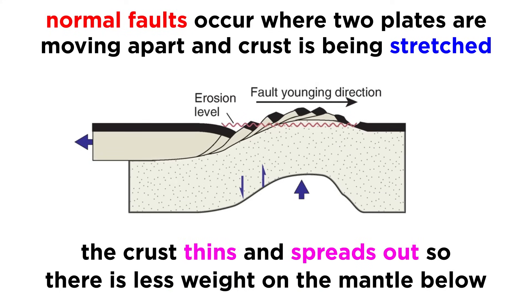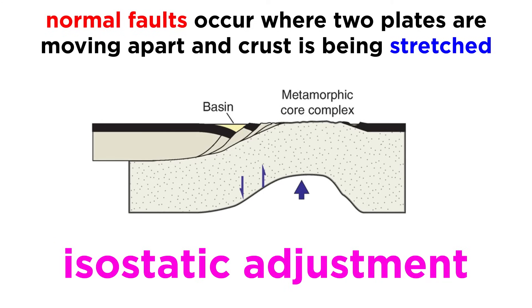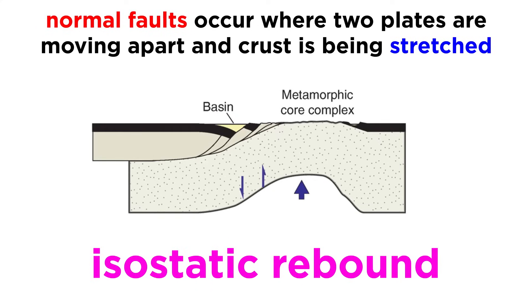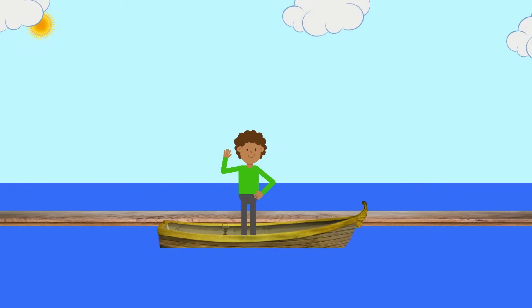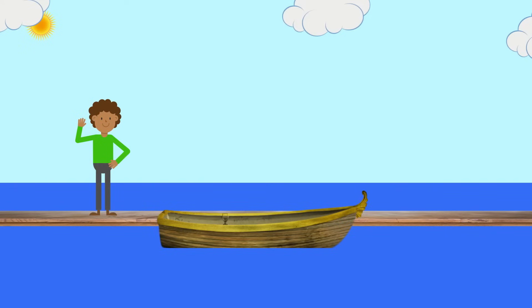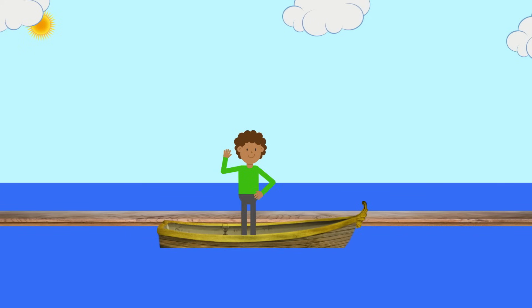As the crust thins during extension, its weight above the underlying mantle is reduced and spread out over a larger surface area. This causes the crust to bob up, in a process called isostatic adjustment, or more specifically, isostatic rebound. It's like walking off a boat. When your weight is removed, the boat bobs upward and rises in the water. Get back in, and the boat bobs down in response to your weight.